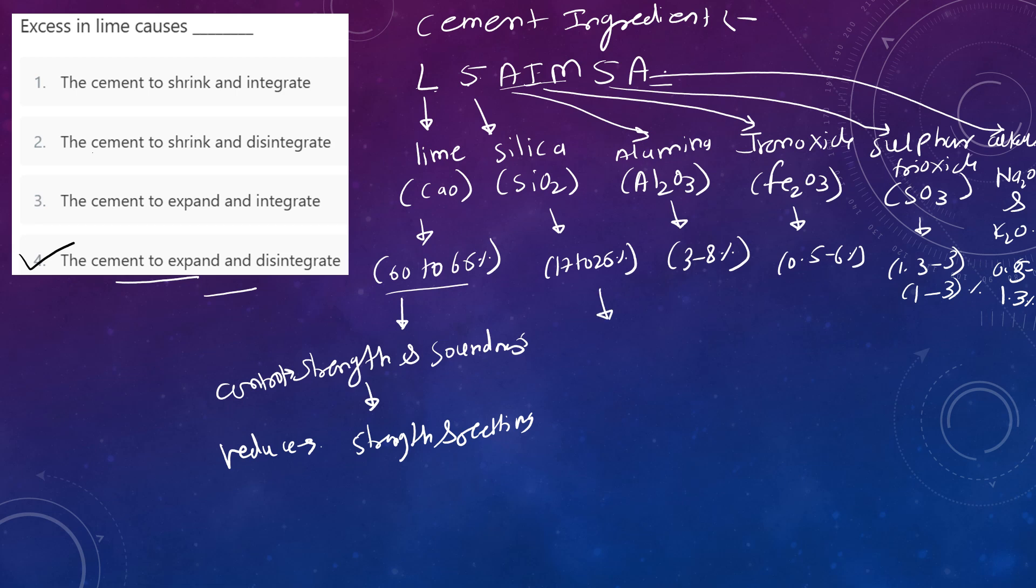Second, silica also gives strength if we achieve proper proportion. If excess silica content is added, it causes slow setting. Third, alumina is responsible for quick setting. If we excess the content of alumina, it lowers or reduces the strength.